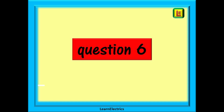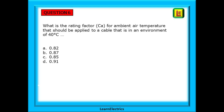Question 6: what is the rating factor CA for ambient air temperature that should be applied to a cable that is installed in an environment of 40 degrees centigrade? Pause the video, find the keywords, find the table, find the answer. Take your time, and move on when you are ready.